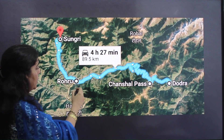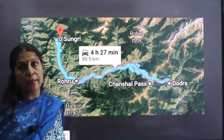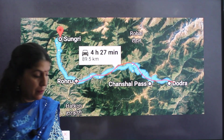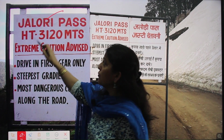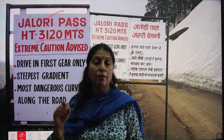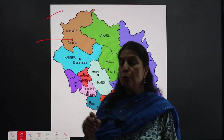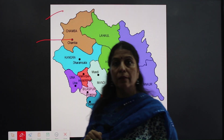The next important pass is Chancel pass, located in the Shimla district of Himachal Pradesh. This pass connects Rohru to the Dodra Kavar area of Shimla district. The next pass is Jalori pass, located at 3120 meters above mean sea level. This pass connects the Kullu region with the Shimla region.